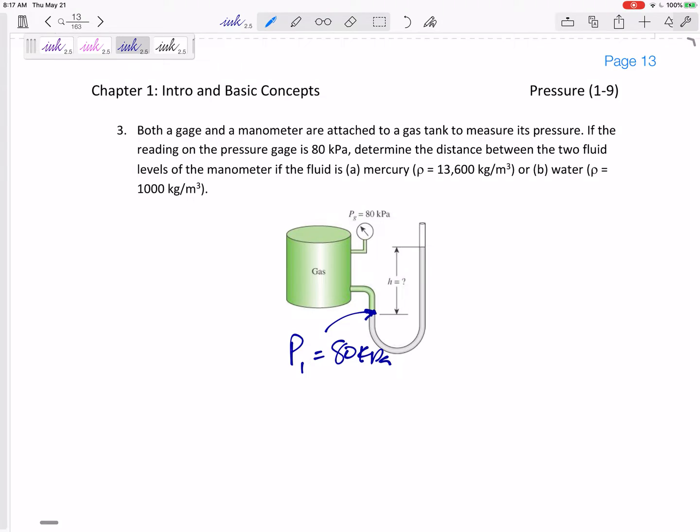This is how I like to do these problems. I'm going to start at 80 kPa and then go straight up here. It doesn't matter that we went down and over, it just matters the height that we start and the height that we end. We're going from this level up to that level. If we're going up, we subtract rho g h.